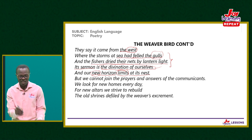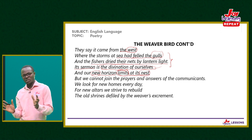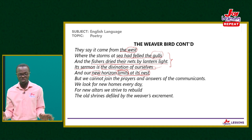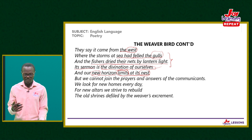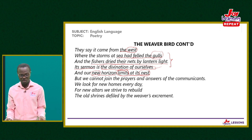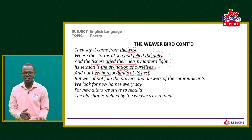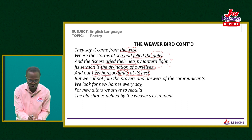Our new horizon still limits today — that's why the poem is relevant. We must look beyond the colonial legacies. What they preach came from the west where the storms had destroyed things and they dried nets by lantern light. Each sermon is the divination of ourselves — they tell us who we are. The effect is that what we can see ends at their nest, we can't see beyond them. And the old shrines have been defiled by the weaver's excrement — that which came from them.